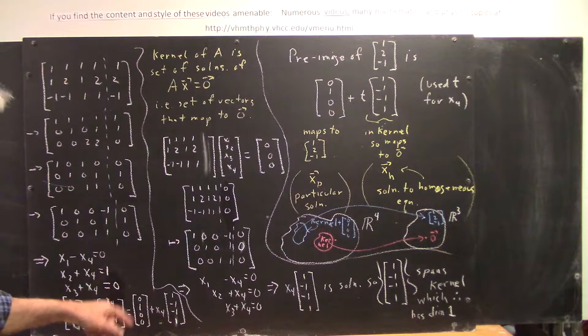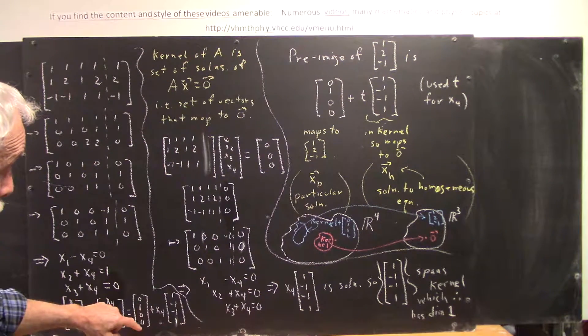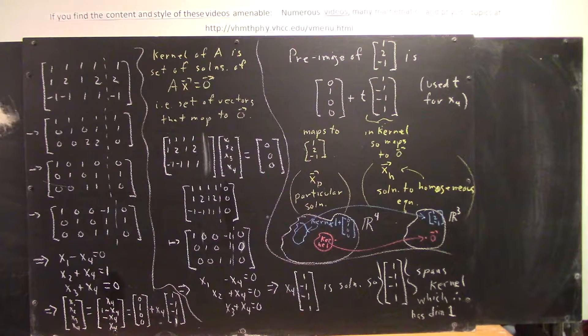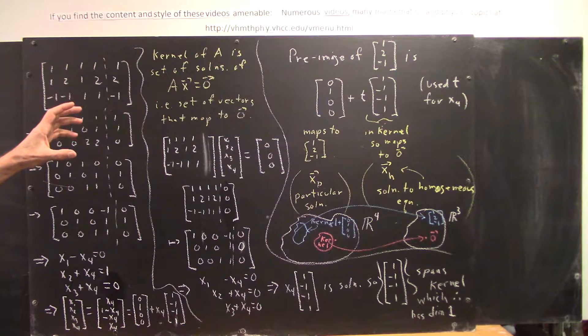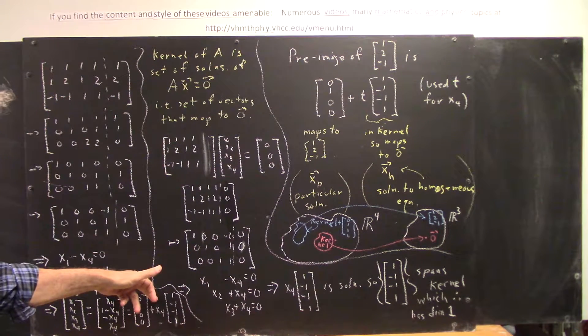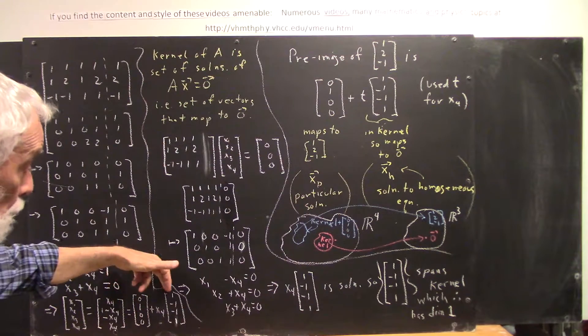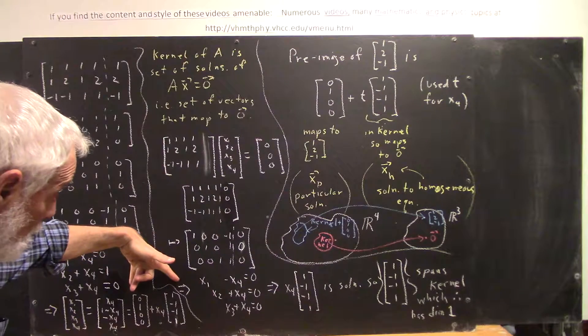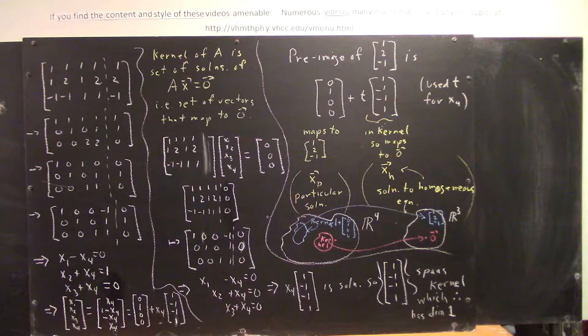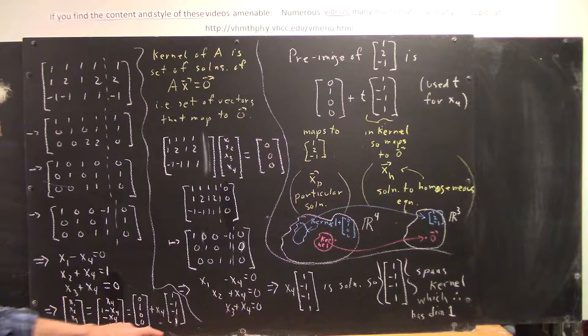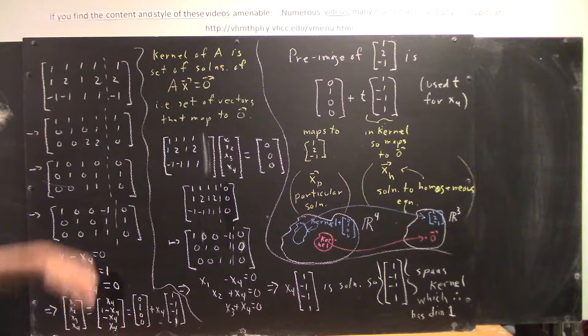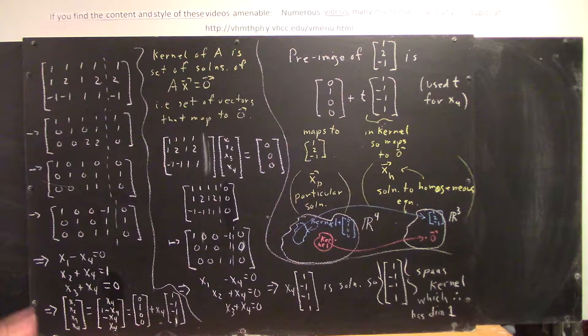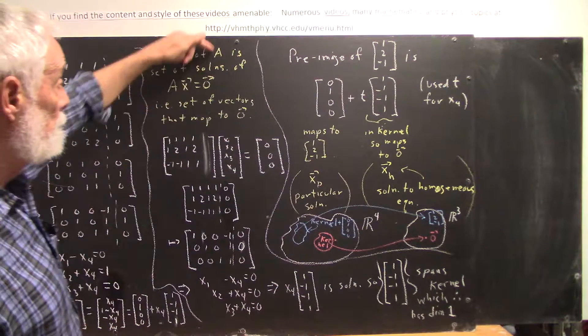That set consists of this single vector plus a vector from this null space. Now, this vector isn't in the null space. The set of vectors that you get when you add this vector to vectors in the null space is not a subspace, but it is a set within R4, and it's a set within R4 that's as big as the null space. So, we're going to let that kind of motivate the definition of the kernel of a matrix.